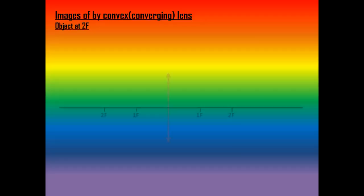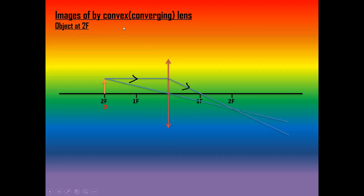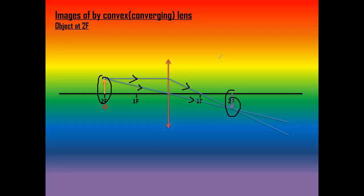When the object is exactly at 2F, the parallel light ray passes through the focus and the ray through the center passes straight. These two light rays join again at 2F on the other side. So when the object is at 2F, the image also forms at 2F, and the size of the object and the image will be the same.